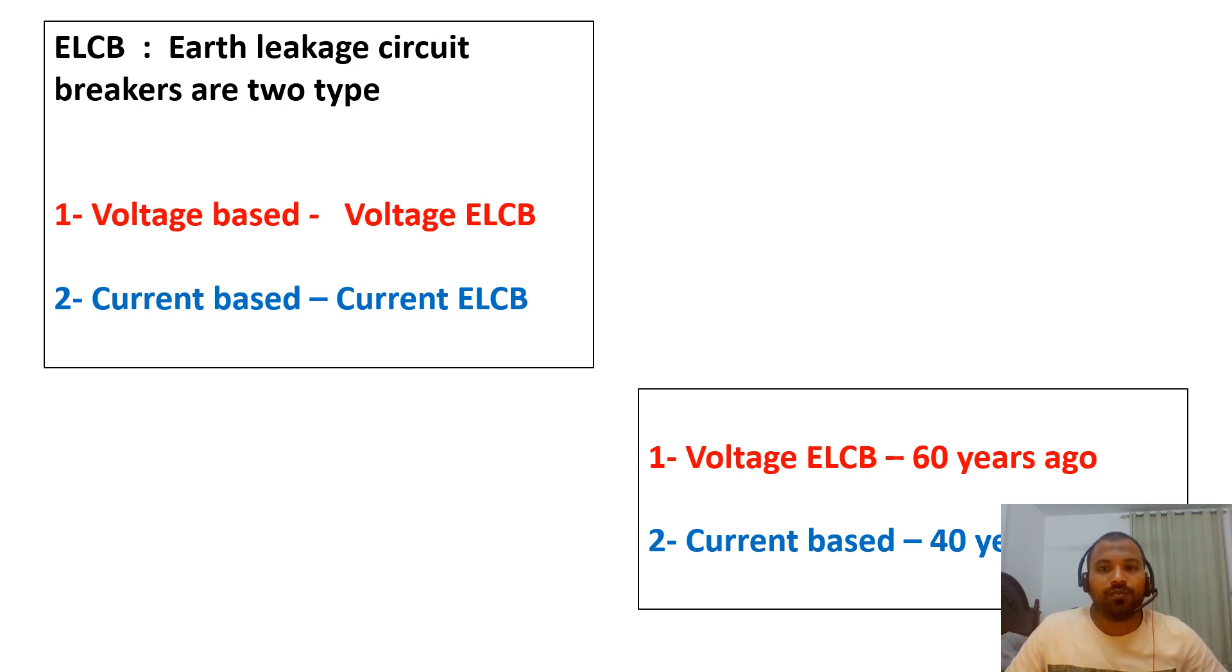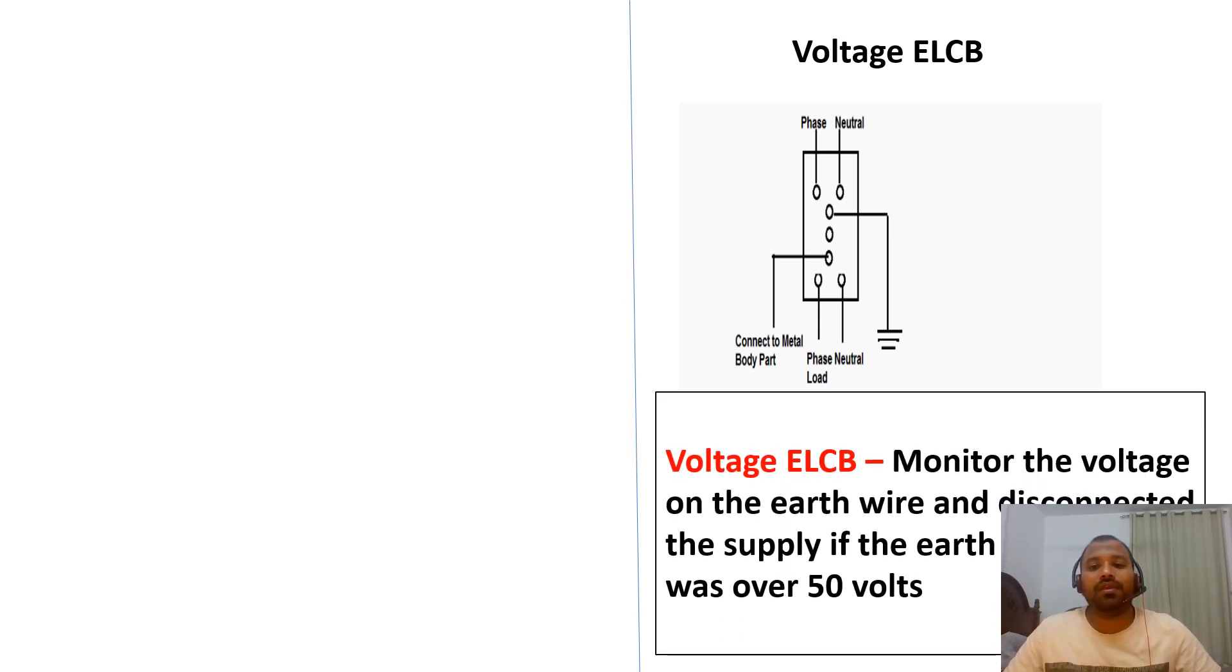Let's see in detail about voltage ELCBs and current ELCBs. Let's see voltage ELCBs. This is the circuit diagram of the voltage ELCB. In the voltage ELCBs have phase and neutral and there is a connection of earth wire with the ELCBs. What is happening here?